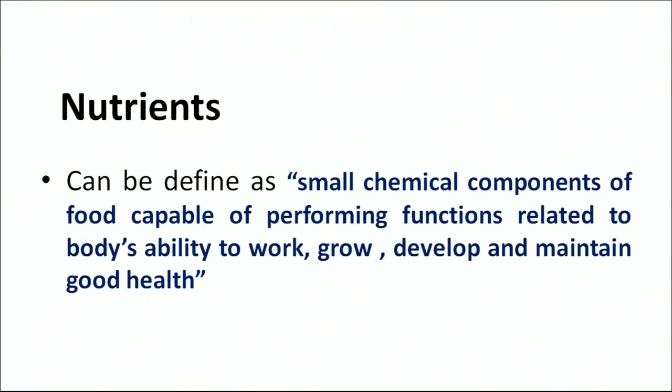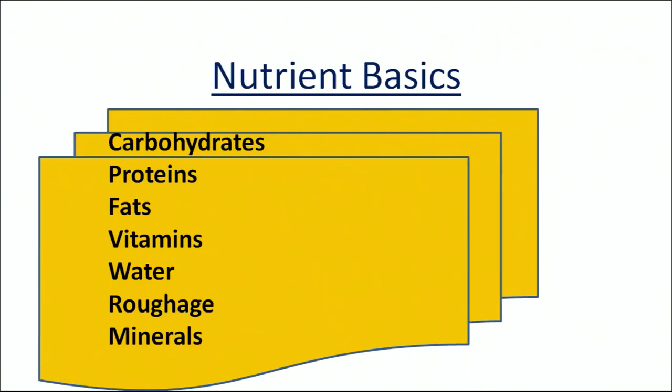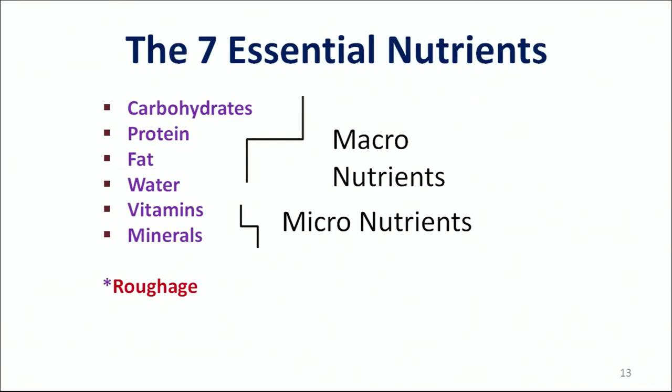Nutrients can be defined as any chemical components of food which, when taken, perform functions related to body growth, ability to work, grow, develop, and maintain good health. The basic nutrients are carbohydrates, fats, proteins, vitamins, minerals, water, and roughage. There are seven essential nutrients found in any food item. Carbohydrates, proteins, and fat are the macronutrients, while vitamins and minerals form the category of micronutrients, along with roughage.